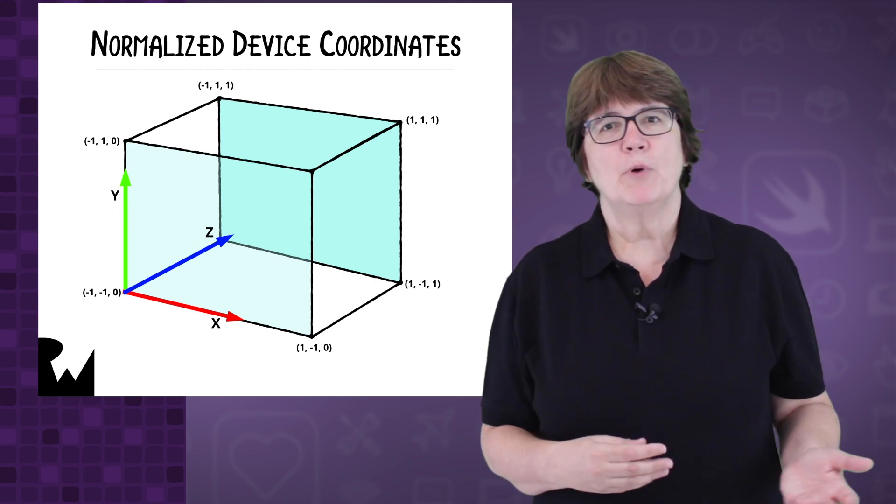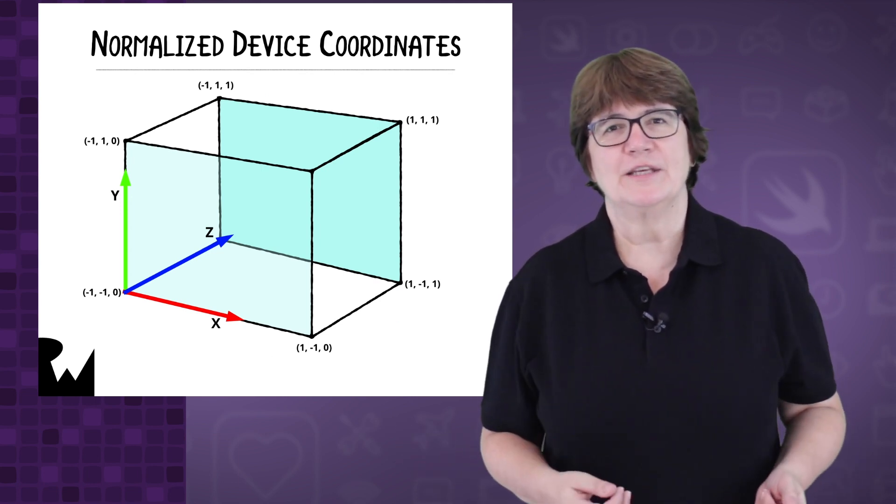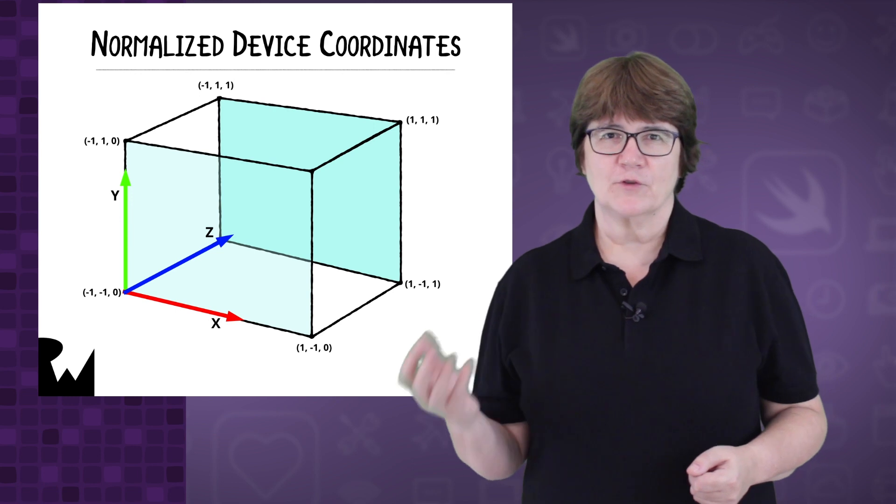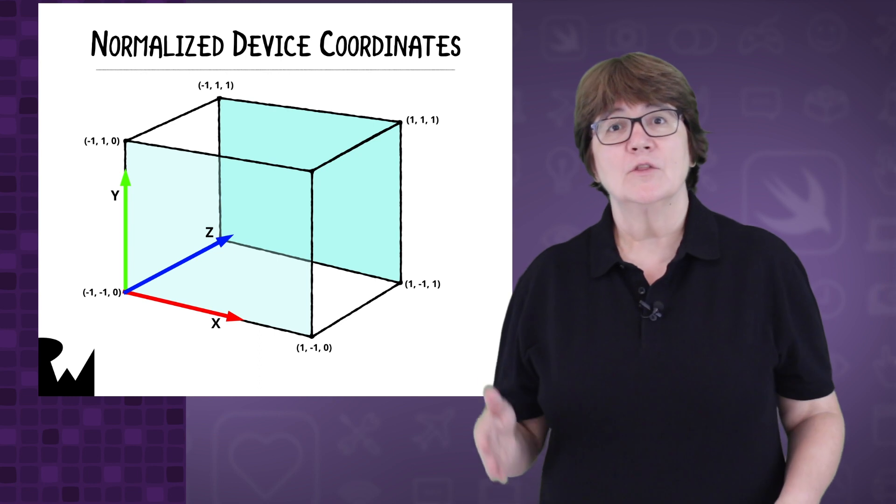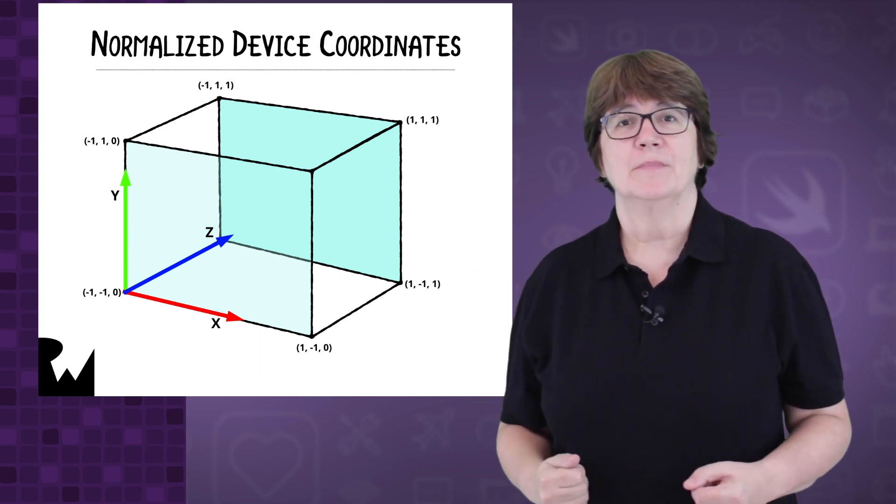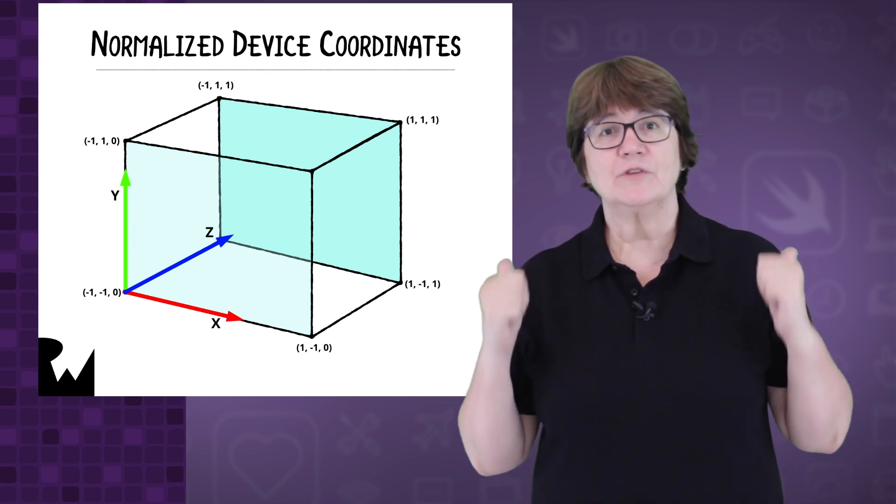In the next video, we'll render some points and a triangle in 3D space. Each vertex of the triangle will have an x, y, z coordinate. The x-axis is horizontal, the y-axis is vertical and the z-axis points into the screen.